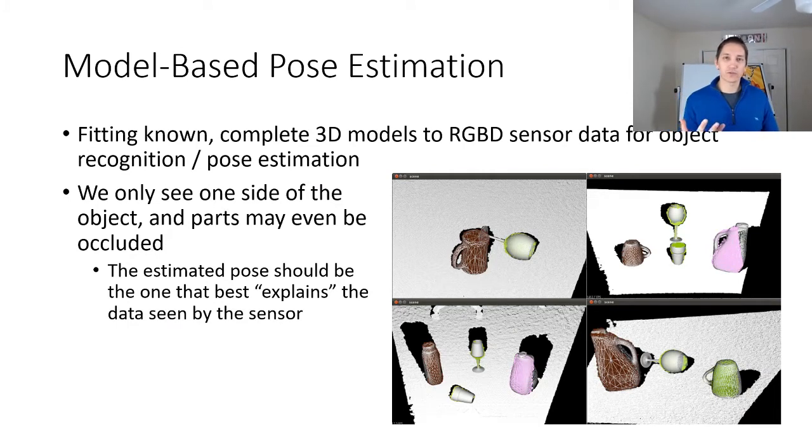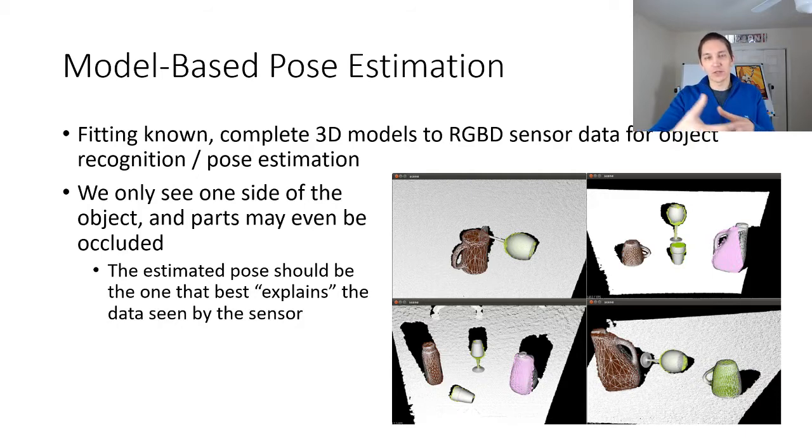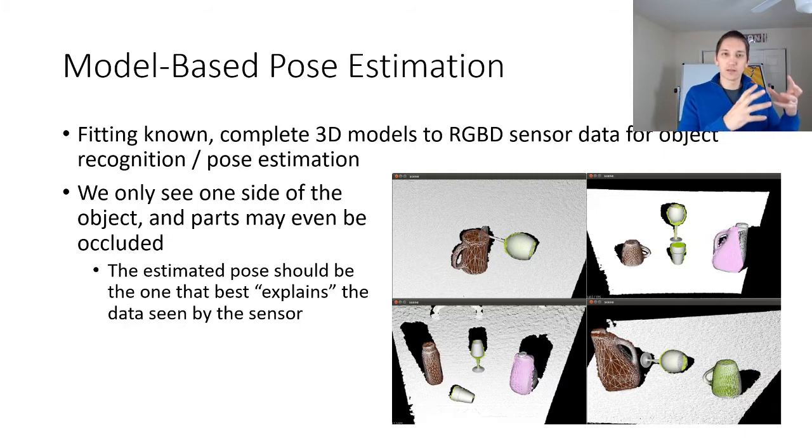Now other important tasks for manipulation especially include model-based pose estimation. If we have a model of a known object in a scene, and we have a 3D scan of the scene, what we'd like to do is figure out where the object is in mapping from local coordinates to camera coordinates. The difference between this and fiducial detection is that we only see one part of the object, one side of the object, through the camera. Some of those parts may also be occluded. We may have objects blocking the other object, and so we might want to figure out from just the points describing the object where it is in the scene. What we'd have to do is actually try to explain the data seen by the sensor by producing that estimated pose.